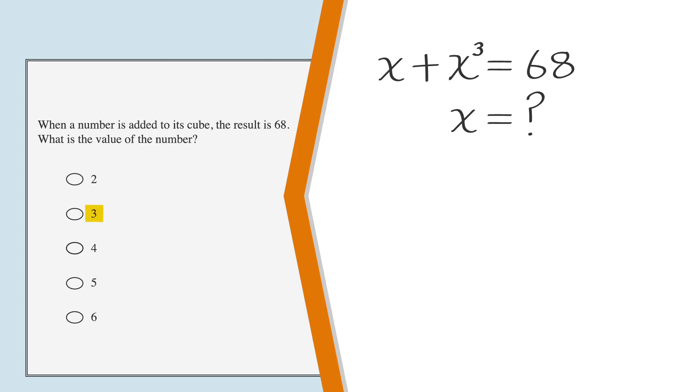Let's try the second answer choice, which is 3. Substituting 3 for x, we get 3 plus 3 cubed, or 27, which is equal to 30. This is too small.